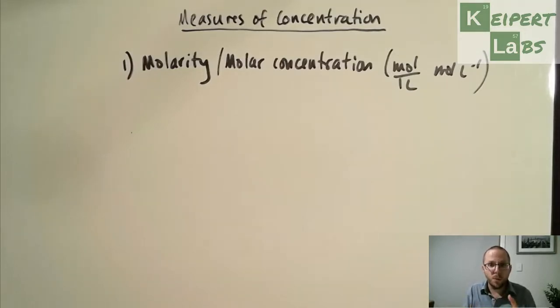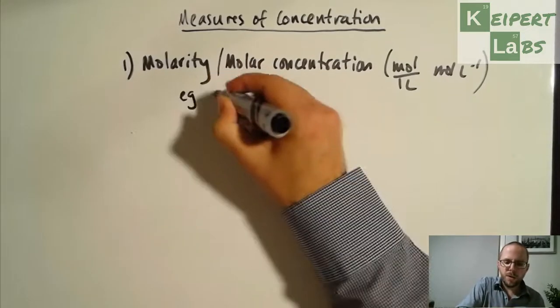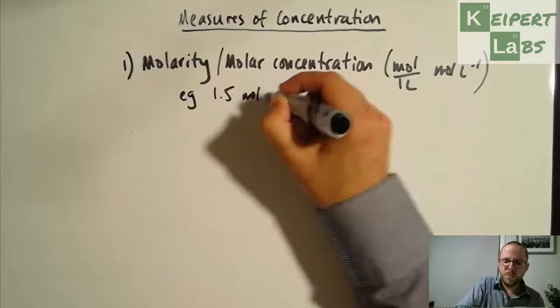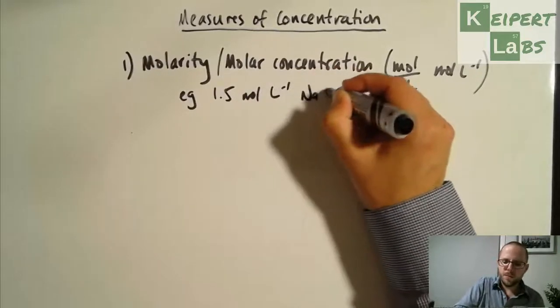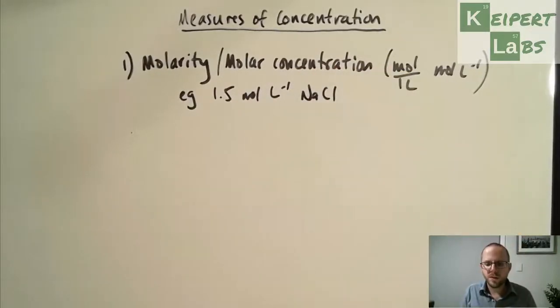So that is how many moles of solute for every litre of solvent. Typically we're talking about water here, we're talking about aqueous solutions. For example, we might be saying we have a 1.5 mol L⁻¹ NaCl solution. So it's got 1.5 moles of sodium chloride for every litre of water.